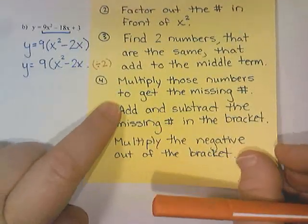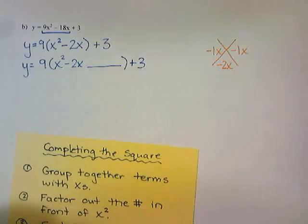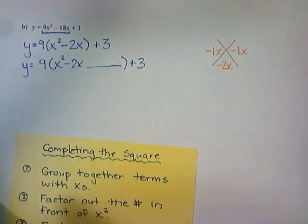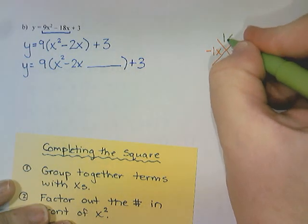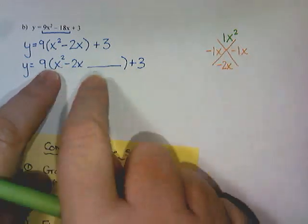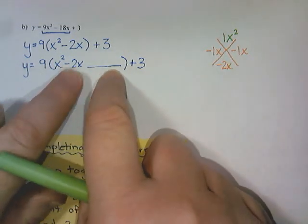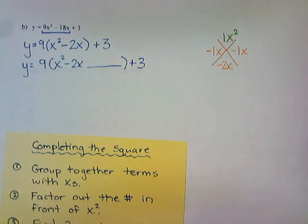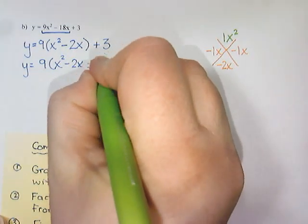That's what it says. Multiply those numbers to get the missing number. So -1 times -1 is positive 1x². So the x² came from that first term and then this number here should be a positive 1. So this should be a positive 1.